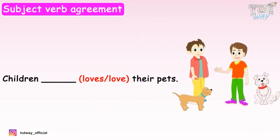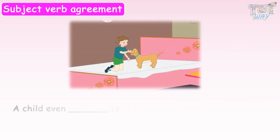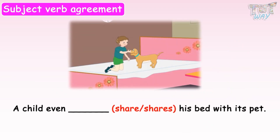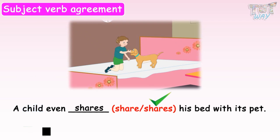Children dash their pets — love or loves? Children is a plural subject, so no S or ES after the verb, so we will use love. Children love their pets. A child even dash his bed with its pet — share or shares? Child is a singular noun, so we will use shares. That is, we will put S or ES after the verb. A child even shares his bed with its pet.